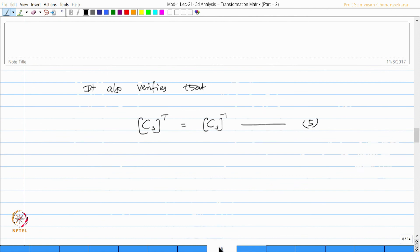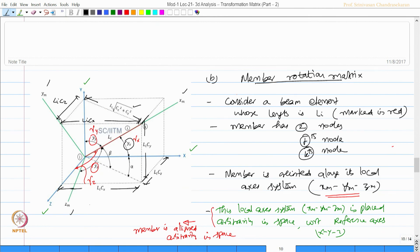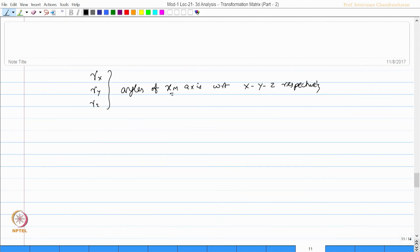So I call this as figure 3 which I am going to use for member rotation. So the figure is clear and these are the angles made by the xm axis with respect to the reference axis x, y, z respectively. Now, we can also write cx as cos gamma x, let cy be cos gamma y, and cz be cos gamma z, which are direction cosines.